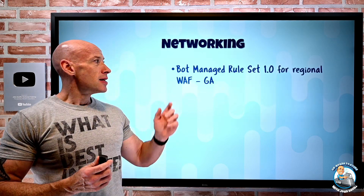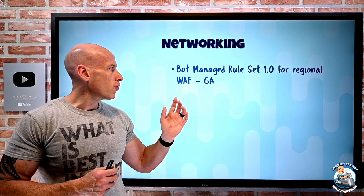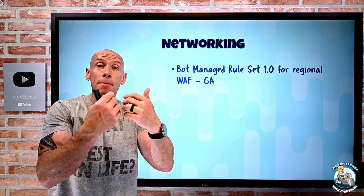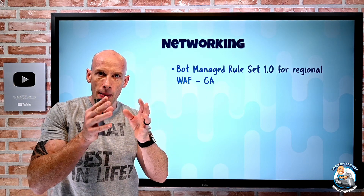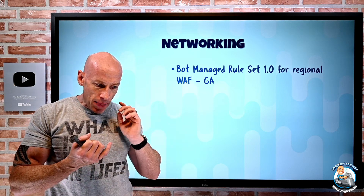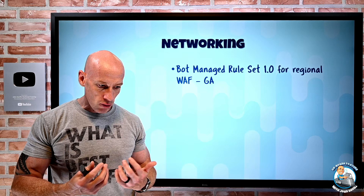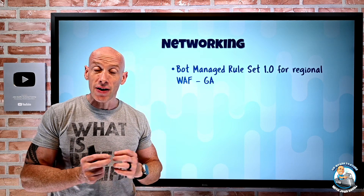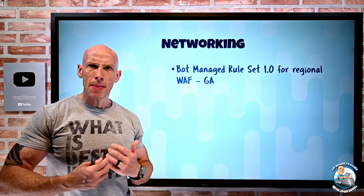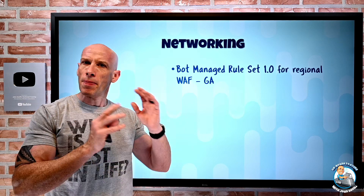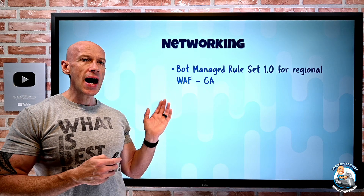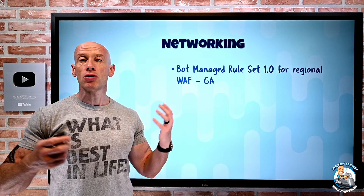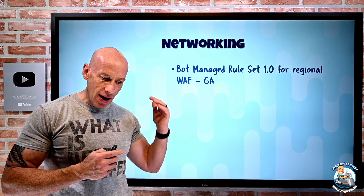On the networking side, there's now a bot managed rule set 1.0 for regional Web Application Firewall. Regional means it adds on to App Gateway — that's the regional version of the WAF — and this is now in GA. Currently you have core rule sets and custom rules, and now you also have this managed set for bot protection. It gives you three categories: good bots (like web crawlers), bad bots from known bad IPs, and unknown. You can set actions for those — allow good bots, block bad bots, and maybe just log the unknown ones.